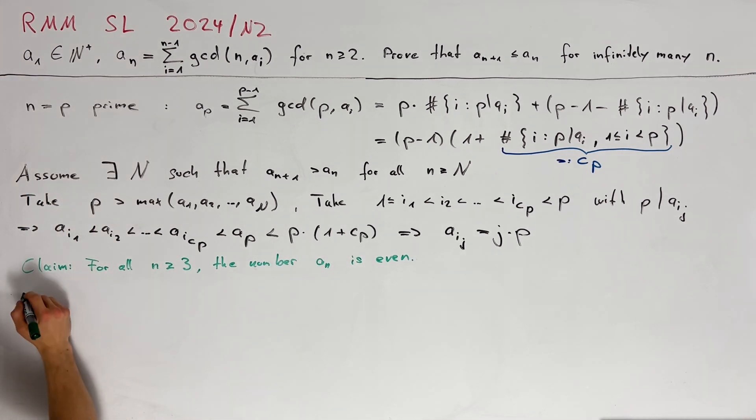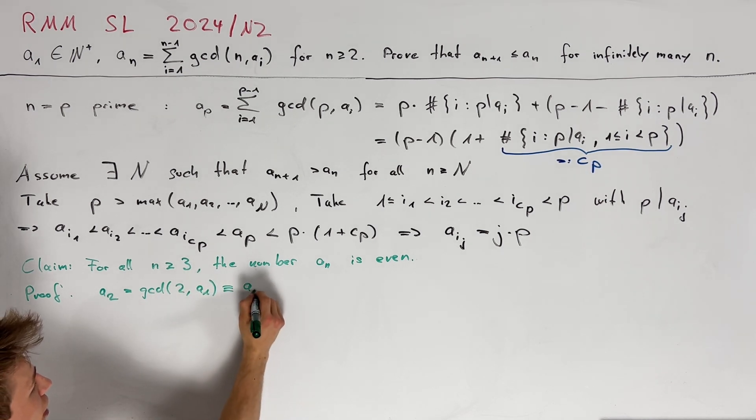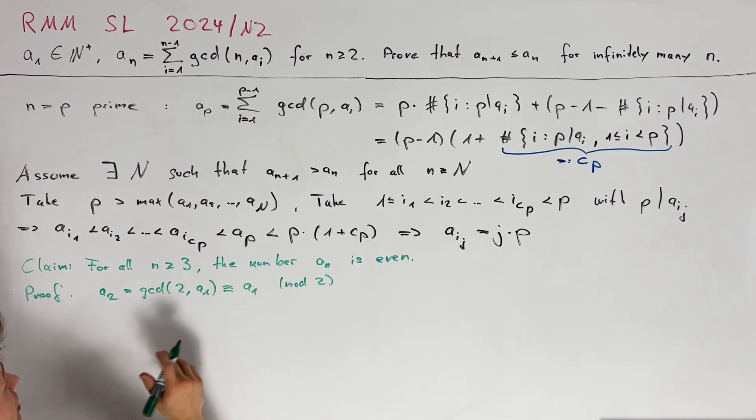For the proof we at first realize that the value of a_2 is equal to the greatest common divisor of 2 and a_1 and therefore this is congruent to a_1 modulo 2. Now we want to distinguish between odd and even values for n.